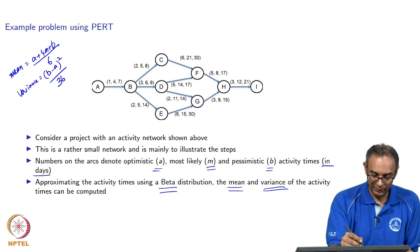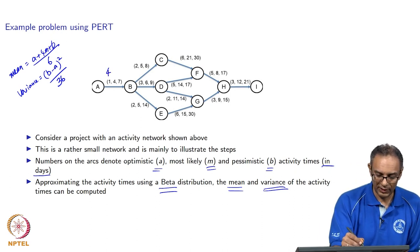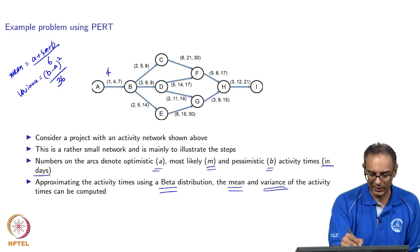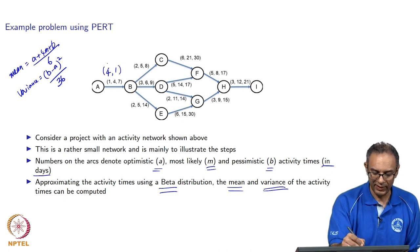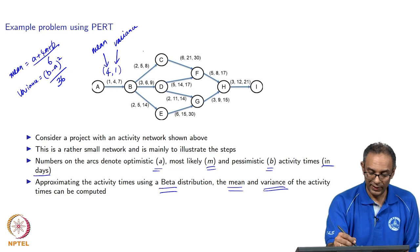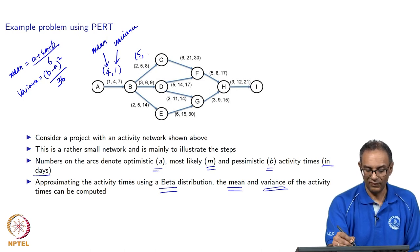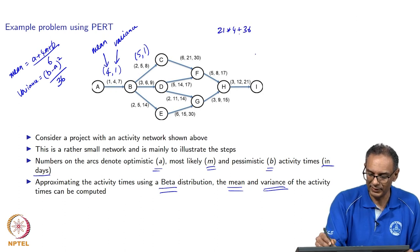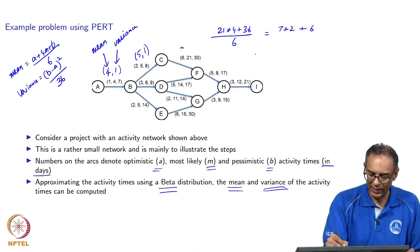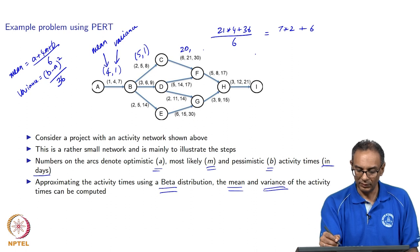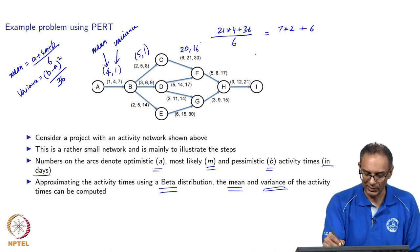For the first arc, the mean is (1 + 4×4 + 7) / 6 = (1 + 16 + 7) / 6 = 24 / 6 = 4, and the variance is (7 − 1)² / 36 = 36 / 36 = 1. For the next arc, the mean is (2 + 4×5 + 8) / 6 = 30 / 6 = 5, and variance is (8 − 2)² / 36 = 36 / 36 = 1. For another arc, mean = (6 + 4×21 + 34) / 6 giving approximately 20, and variance = (36 − 6)² / 36 = 900 / 36... let me recheck: mean = 20, variance = 16.